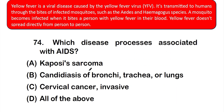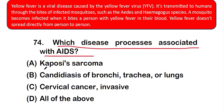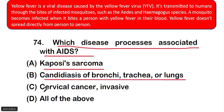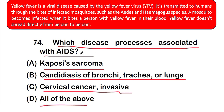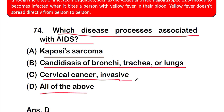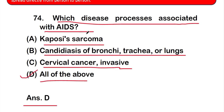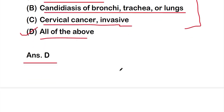Question number 74: Which disease processes are associated with AIDS? Option A: Kaposi's sarcoma, option B: candidiasis of bronchi, trachea, or lungs, option C: invasive cervical cancer, or option D: all of the above. The correct answer is option D — all of these diseases are associated with AIDS.